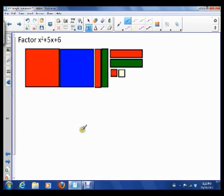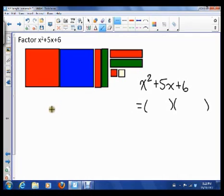So this time I want to factor x squared plus 5x plus 6. So remember our goal is to write x squared plus 5x plus 6 as one thing times another thing. So also remember that we can use algebra tiles for this.